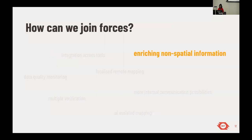The next theme is enriching non-spatial information. Currently we host remote mapping projects through which people add base map features like buildings, highways, and land use areas. But Tasking Manager could be used for something beyond that — not just mapping features, but adding feature attributes using a combination of different resources like street view imagery or external datasets integrated for specific mapping projects. This means going beyond mapping projects and enriching map data with local information.